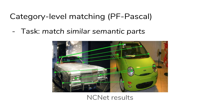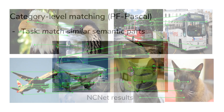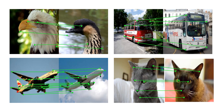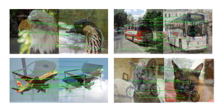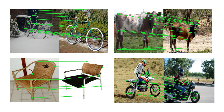The neighborhood consensus network can identify spatial patterns of correspondences to produce correct matches. Here, we show additional examples for other object categories of the PF Pascal dataset. The method is able to obtain correct correspondences, despite the large changes in appearance.